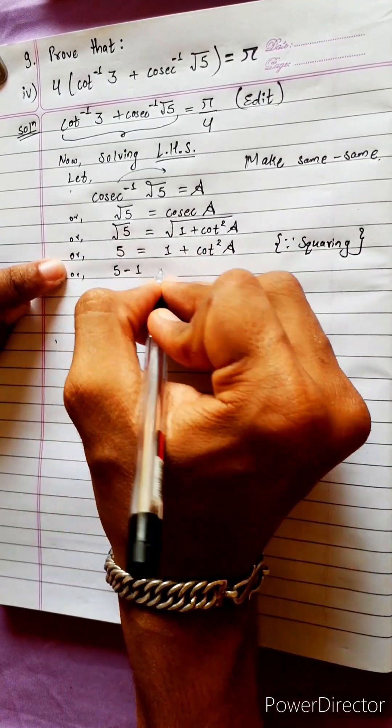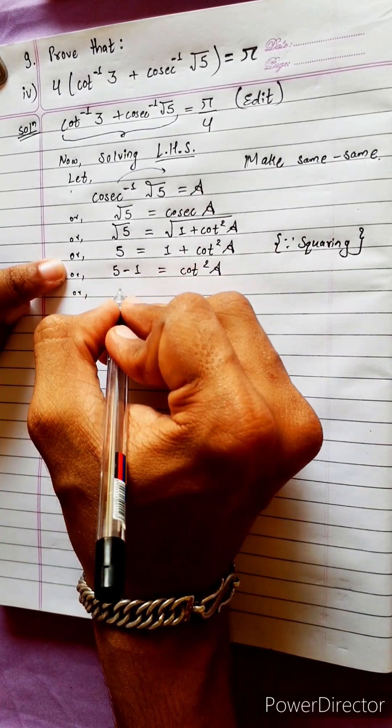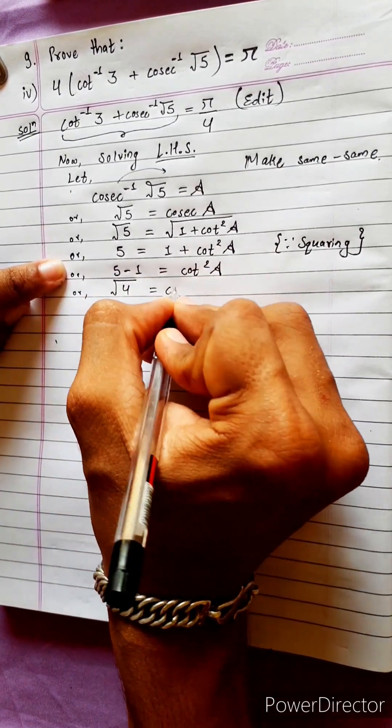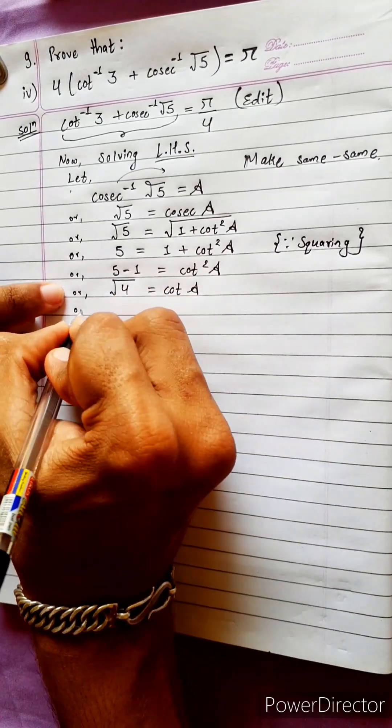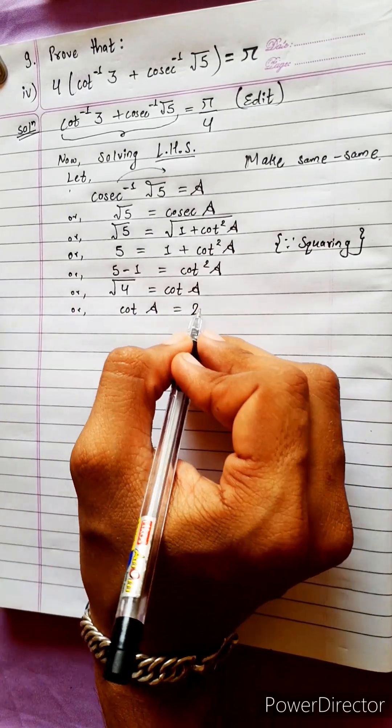And 5 minus 1 equals to cot square A. Or, under root 4 equals to cot A. Or, cot A equals to 2. Plus minus 4 is equal to 2.